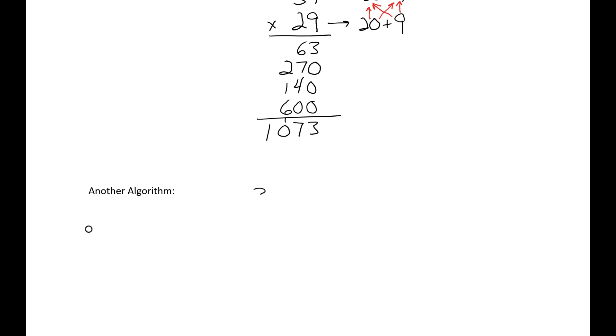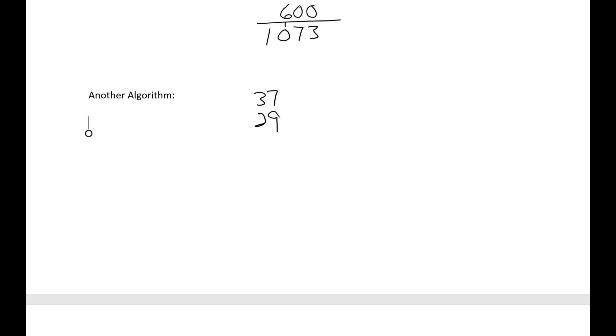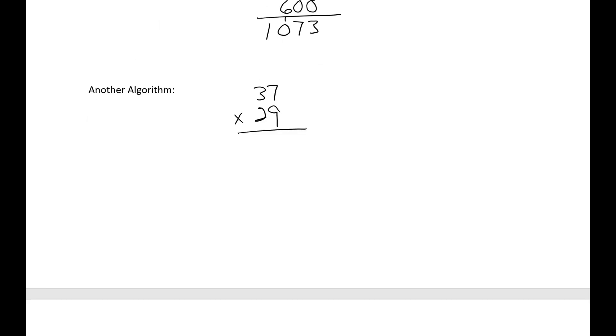So again, write the two numbers, one on top of the other. Now, in this method, instead of doing four separate multiplications followed by addition, we kind of mix in multiplying and adding at the same time.